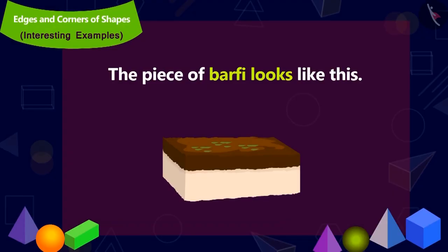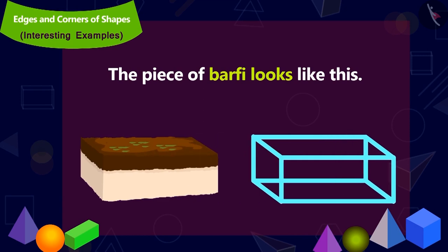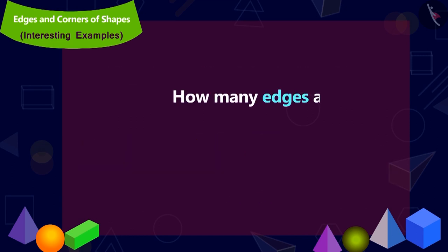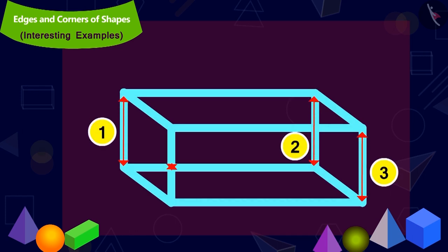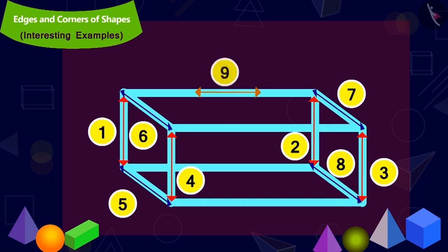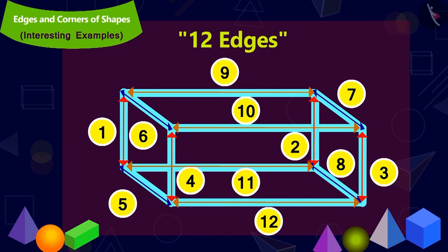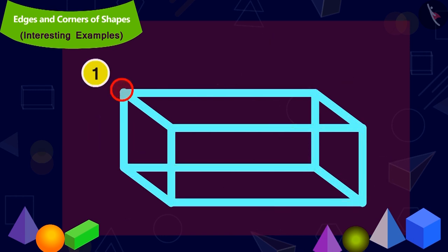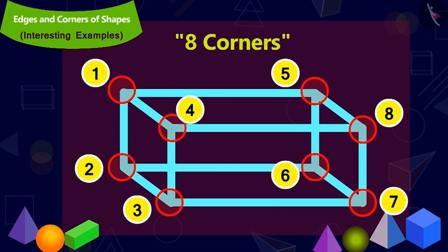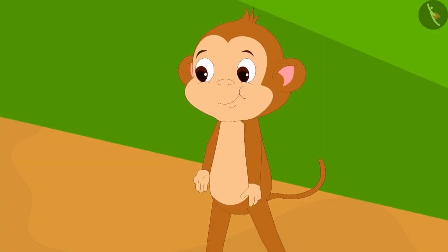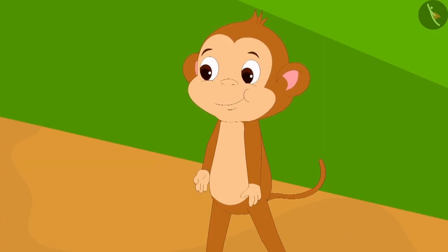This is how the piece of barfi looks. Can you tell how many edges and how many corners does it have? Here are the edges — there are 12 edges in total. And how many corners? 8. Babban's answer is absolutely correct. He quickly ate the barfi.